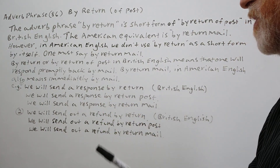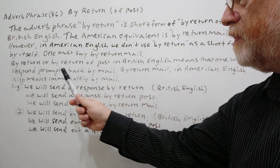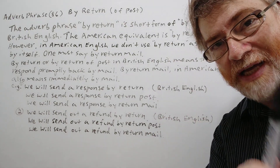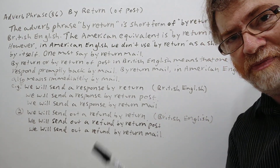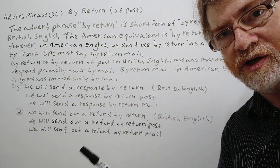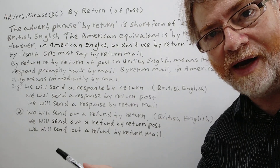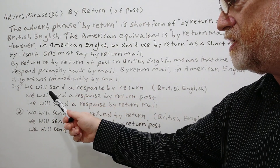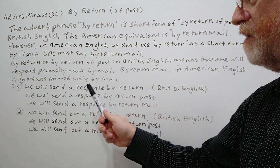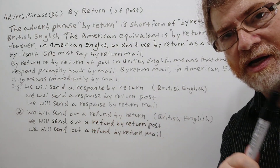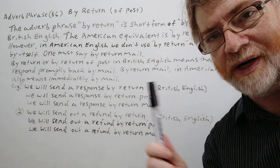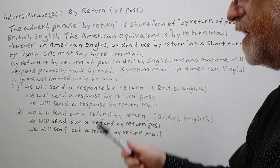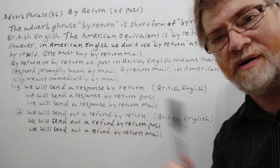So this is the way we should say it in British English: 'We will send a response by return.' If you said just 'by return' in American English, we would be a little confused — we'd say, 'By return of what?' If they say it in British English: 'We will send a response by return of post,' Americans would understand that because we know that post means mail, but we would more naturally say: 'We will send a response by return mail.'